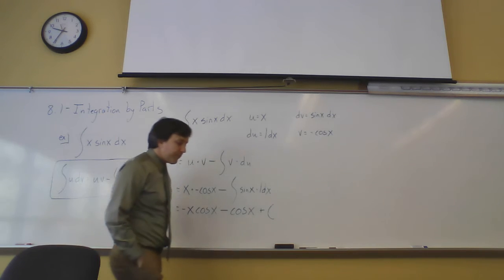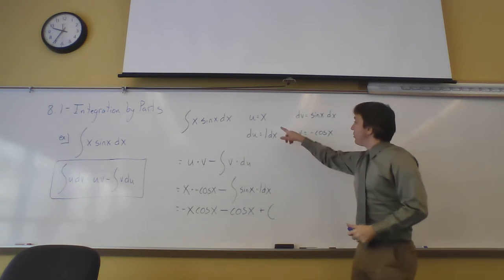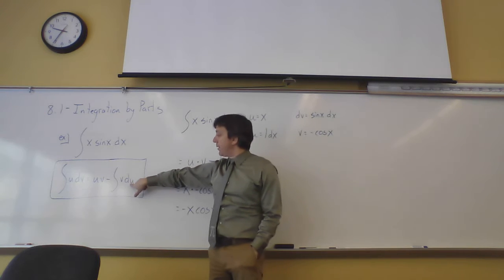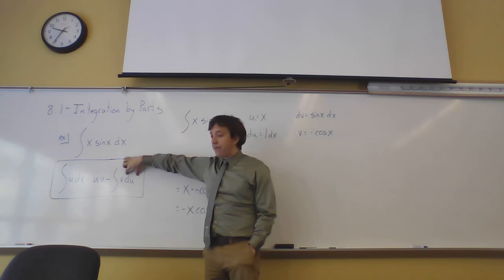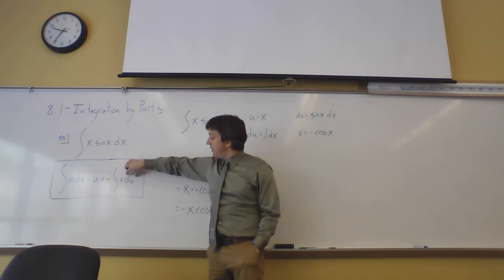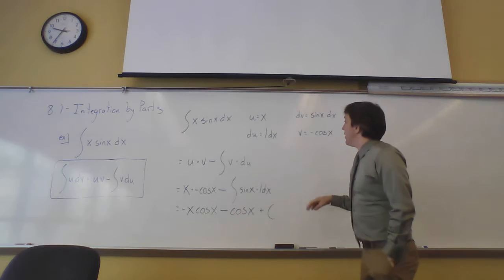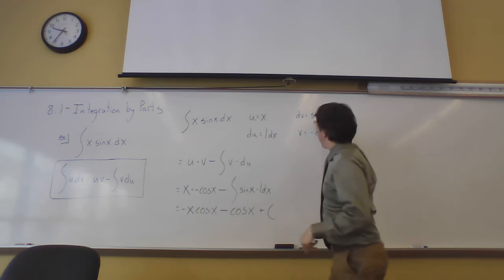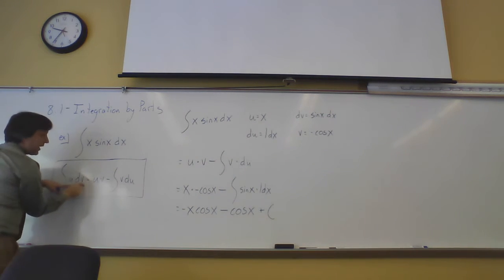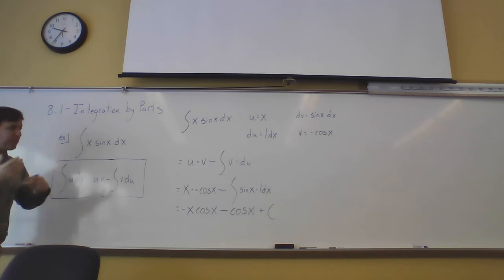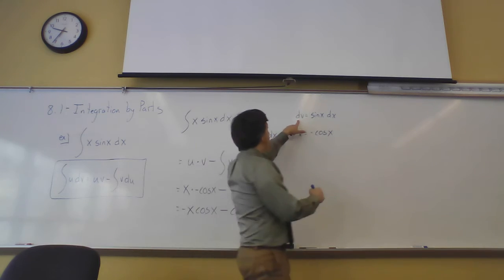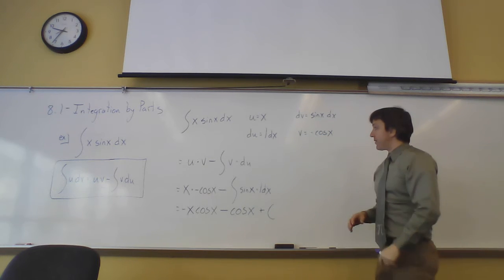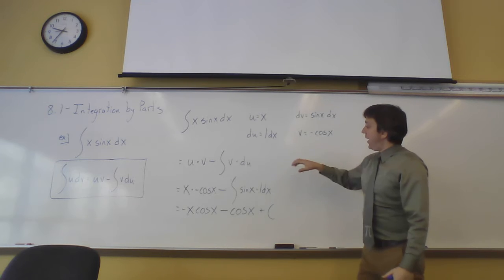I chose to call u = x because du is just 1·dx. If you look at the formula, that's going to immediately simplify the integral — the piece on the other side is just 1·dx. So u = x, du = 1·dx, and dv = sin(x) dx. Taking the anti-derivative of sin(x) gives v = −cos(x). Now I have all the pieces to plug in.